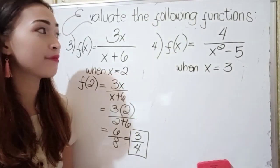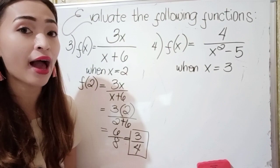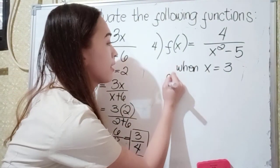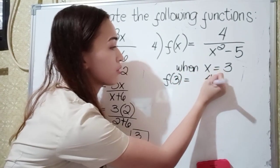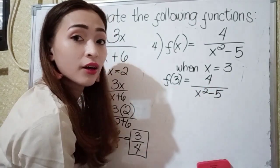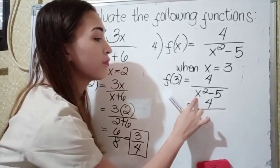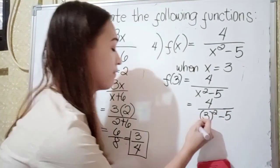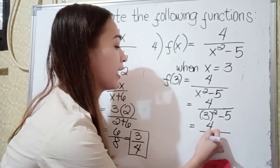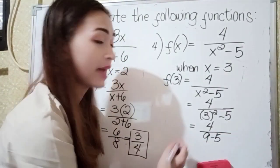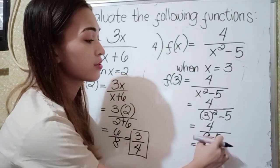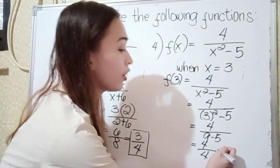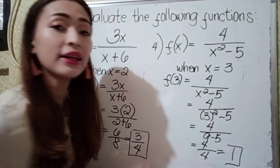For number 4, we have f(x) equals 4 over x squared minus 5, when x is equal to 3. Substitute the value of 3 to x. So f(3) equals 4 over x squared minus 5. That becomes 4 over 3 squared minus 5. 3 times 3 is 9, so 4 over 9 minus 5 equals 4 over 4. Since we can simplify 4 over 4, it equals 1. So our final answer in number 4 is 1.